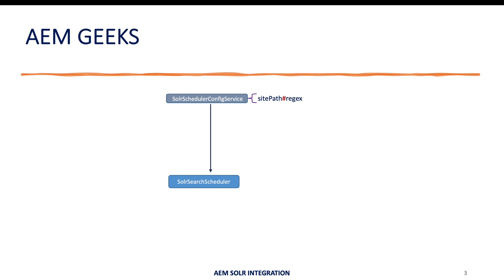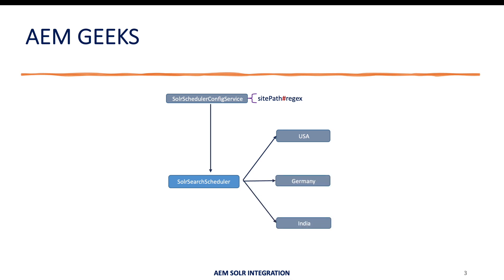Let's say I have a scheduler and a configuration service which provides the OSGI configuration. We are indexing three different sites — one USA site, one Germany site, and one India site — and I want to index the data of each site in Solr using a scheduled time. But I want to execute each at a different time. For example, I want to index the US site data to Solr at midnight USA time, Germany at midnight Germany time, and India at midnight India time. But these sites are in different time zones.